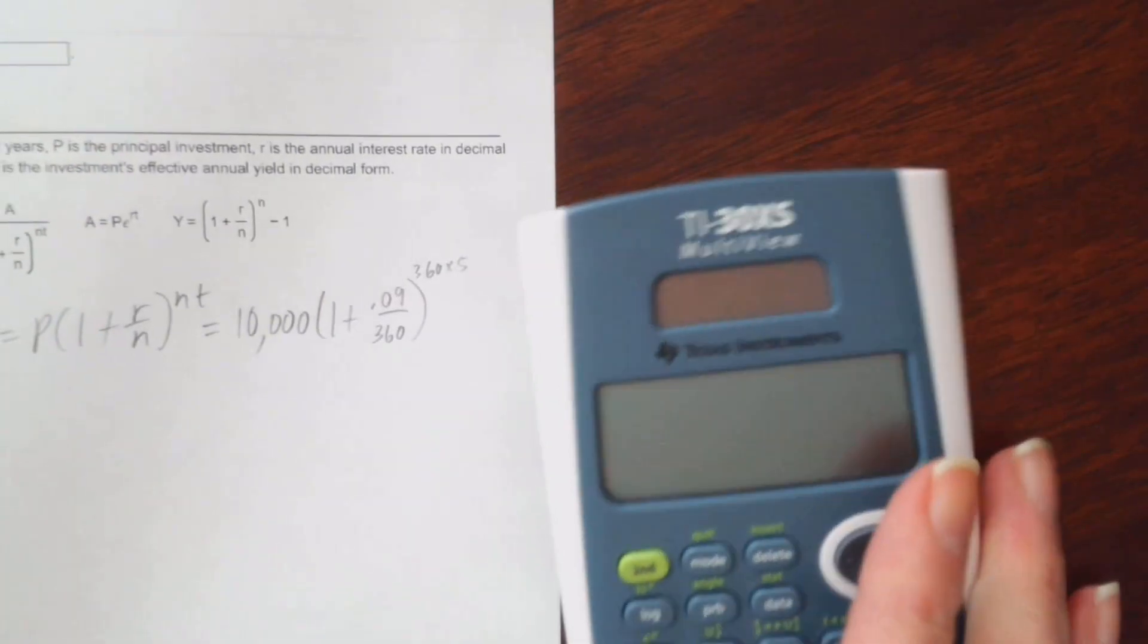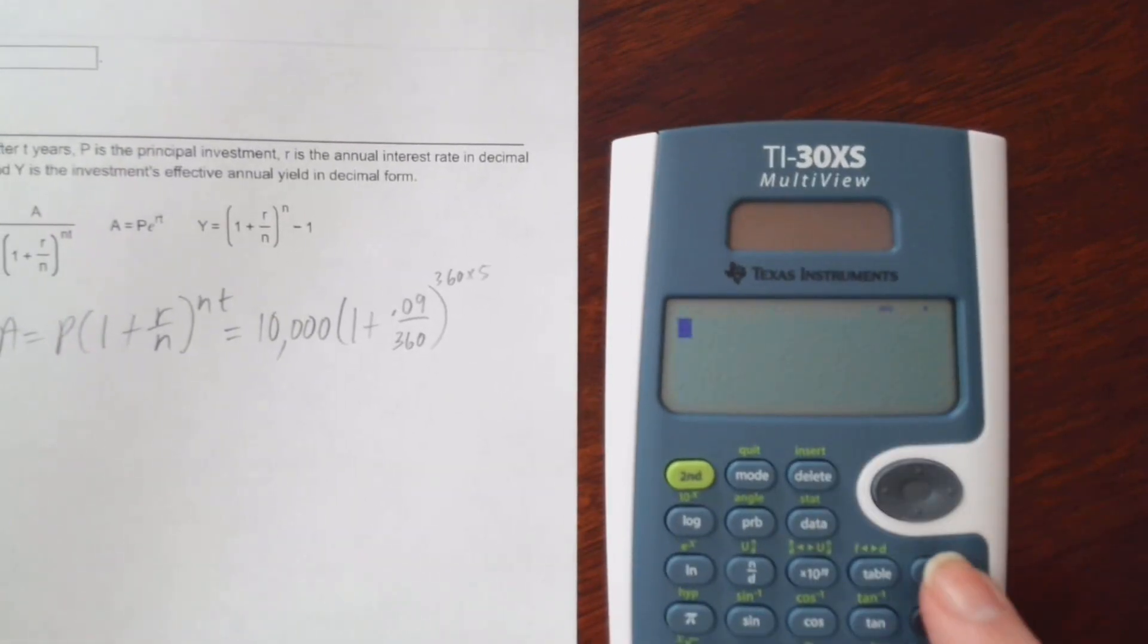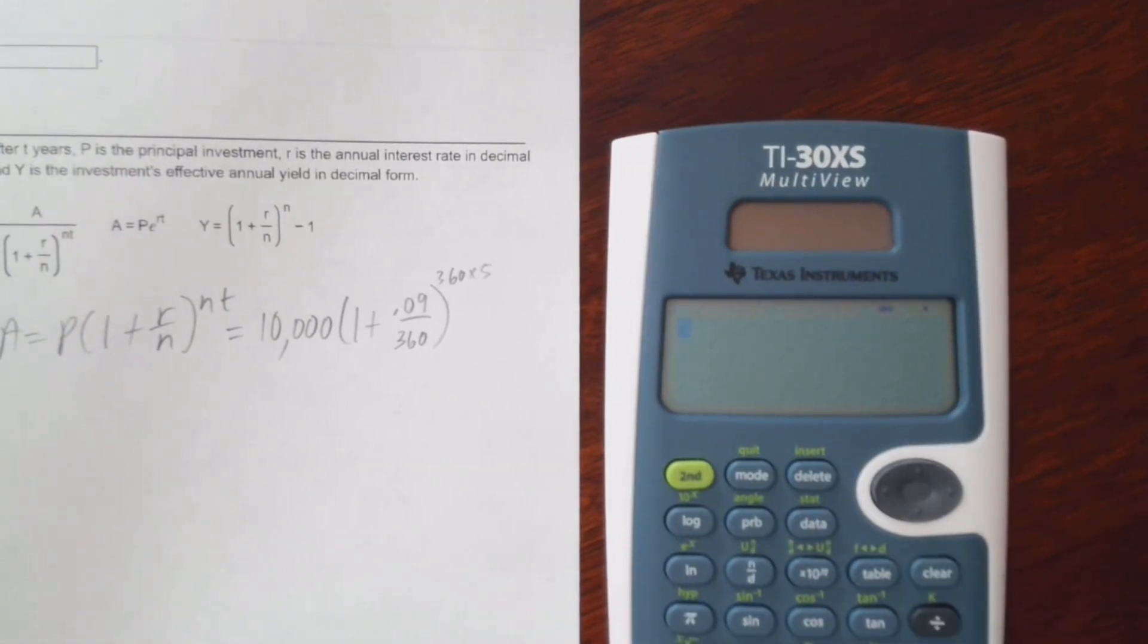I'm going to go ahead and move this over. So 10,000 times 1 plus 0.09. Notice I'm just using the fraction button to put that in.